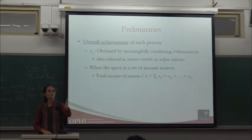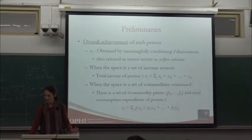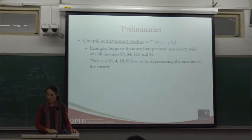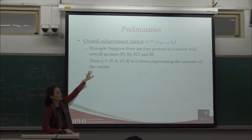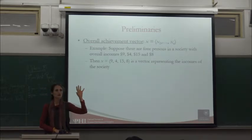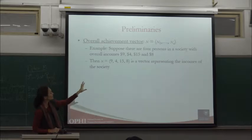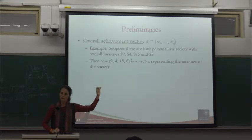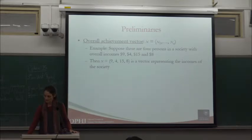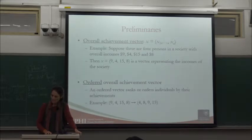When it's income, you add up all sources of income. When it's commodities, you multiply the commodities consumed by their prices and sum them to get total consumption expenditure. So when we talk about an achievement vector with people having income of 9, 4, 15, and 8, those are their consumption or income aggregates, and the vector represents all of the incomes in that society. It might be ordered from lowest to highest if you are working on dominance.